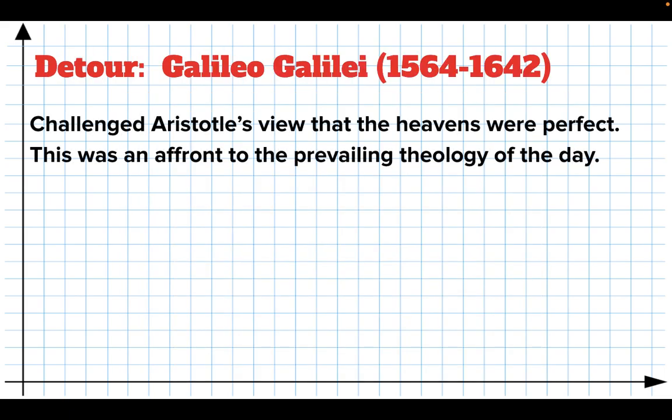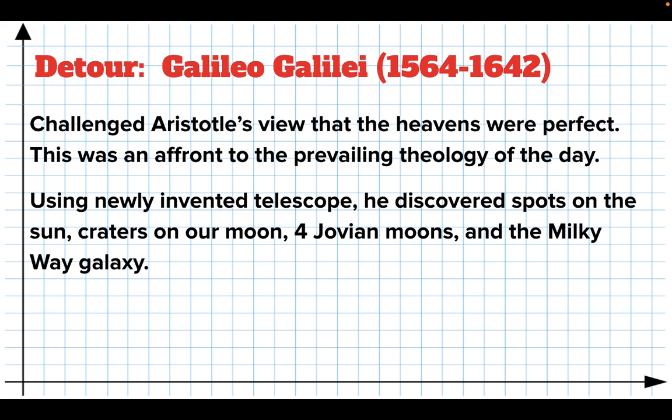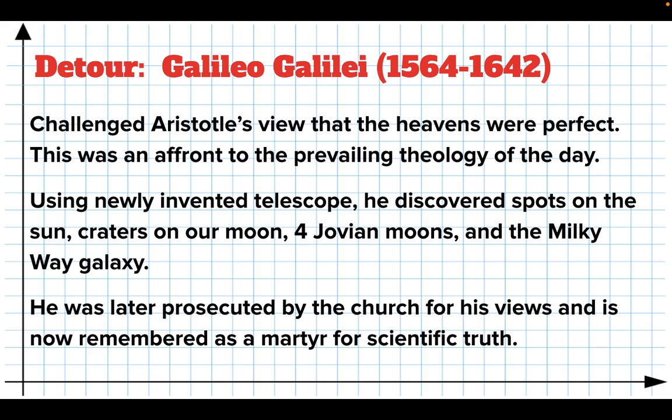Quick detour. Galileo was an interesting guy. He challenged the views of Aristotle that the heavens were perfect, and he basically got himself in trouble with the church. He wasn't very content to quietly publish science. He was a bit of an apologist, and he wanted to ruffle some feathers, so he got himself in trouble. But he did do some cool things. He used the newly invented telescope. He actually didn't invent it. It was invented by the Dutch about 30 years before, but he pointed it at the sky, and he discovered spots on the sun. He discovered craters on the moon. He discovered that Jupiter has four moons going around it, which we now call the Galilean moons, and he discovered the Milky Way. So these were all an affront to the current theology, which said that the heavens were perfect. So if the heavens are perfect, how can there be spots on the sun? How can the moon have all kinds of craters and pockmarks in it? That doesn't go with the theology of the perfect heavens. So he was prosecuted by the church for his views, and he's pretty much remembered as sort of a martyr for science, although he did have some fairly significant contributions.